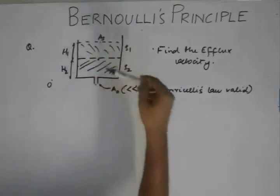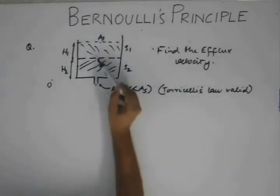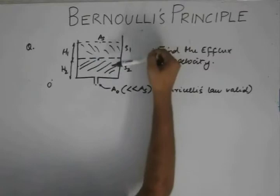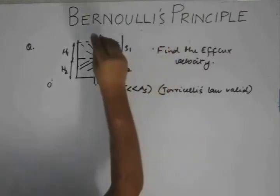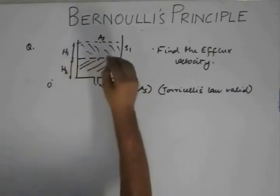Here, we have pressure as P atm plus no other pressure. Here, we have pressure as P atm plus rho1gh1. But we have potential energy here as rho1gh1 if the reference is here. And here,